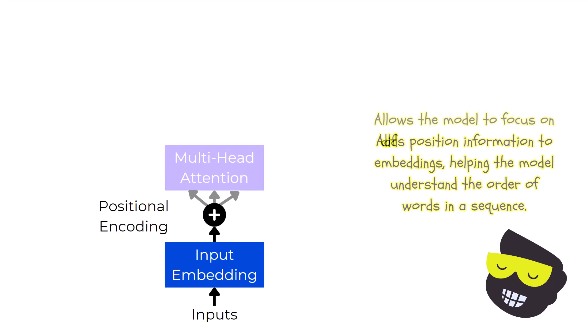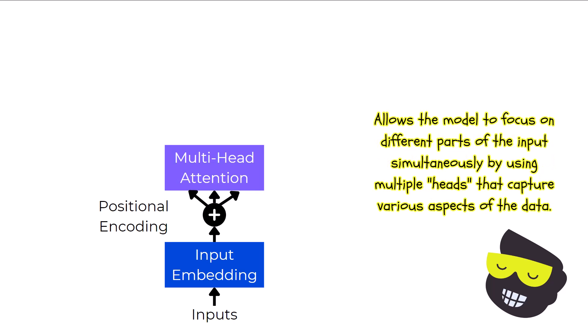The core component in the encoder is the multi-head attention mechanism. This powerful feature enables the model to focus on different parts of the input sequence simultaneously. Now, you might wonder, why does it have multiple arrows as inputs? These arrows represent different heads in the multi-head attention mechanism, each learning to focus on different aspects of the input data.